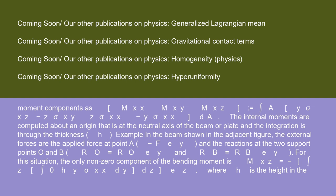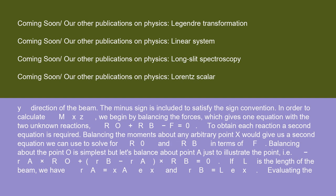The internal moments are computed about an origin that is at the neutral axis of beam or plate and the integration is through the thickness h. Example: in the beam shown in the adjacent figure, the external forces are the applied force at point A (-F·e_y) and the reactions at the two support points O and B. R_O = R_O·e_y and R_B = R_B·e_y. For this situation, the only non-zero component of the bending moment is M_xz = -∫∫ y·σ_xx dy dz.